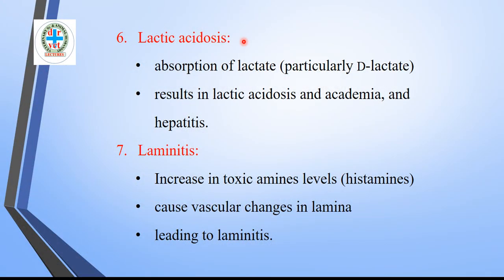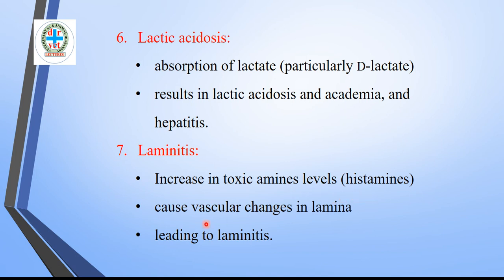Sixth pathogenesis — lactic acidosis: lactic acid produced in the rumen, particularly D-lactate, is absorbed into the circulation, resulting in lactic acidosis and acidemia. Lactic acidosis also produces hepatic insufficiency and hepatitis, which must also be treated. Seventh pathogenesis — laminitis: increased toxic levels produce histamines, and histamine release causes vascular changes in the lamina, leading to laminitis and lameness in all four feet.